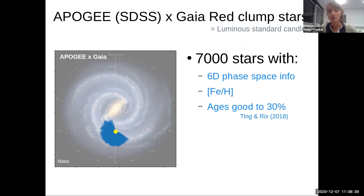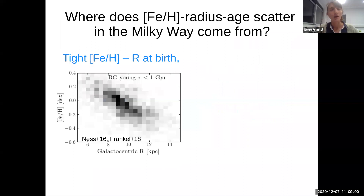With such a data set, we can start making easy plots just to understand if there is any sign of evolution in the data. The first thing we could do is to split this data set in two — look at the young stars and look at the old stars — and see if there is any difference between the two. We can look at the metallicity profile of stars in the galactic disk. For the young stars, you see that there is a tight relation between metallicity and radius. The inner disk is metal-rich and the outer disk is metal-poor, and overall there is not much scatter.